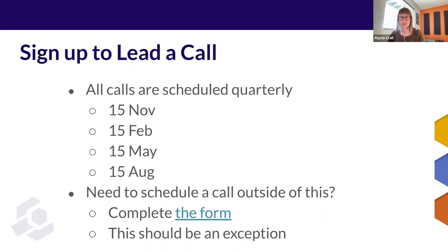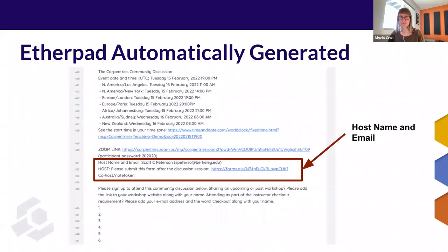Once the scheduling period closes each quarter, you can only add a community discussion by filling out a form that is linked to in the handbook. We ask that you make this an exception because all the information must then be entered manually by a member of the core team, and this can take some time. This is a screenshot of the information that is automatically generated in the community discussions Etherpad through the quarterly scheduling process. It includes the event date and time as well as a link for a community member to find the time in their time zone. Information on how to join the call is also provided, and there is space for community members to sign up for calls they wish to attend. You will see your name and email address appear for each call you have signed up to lead.